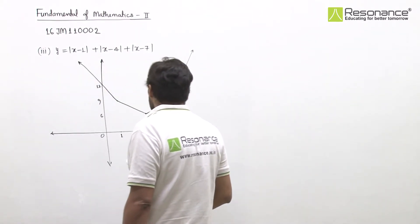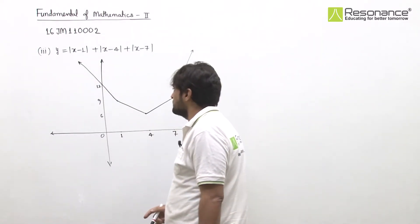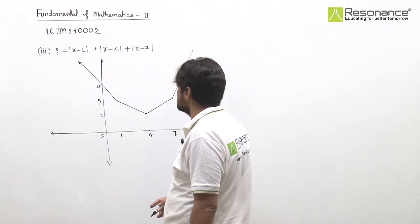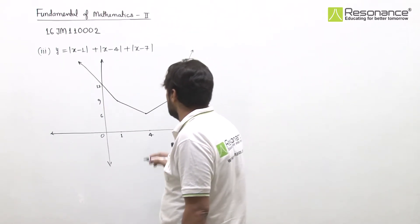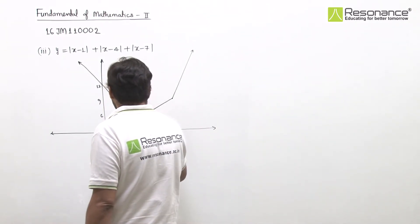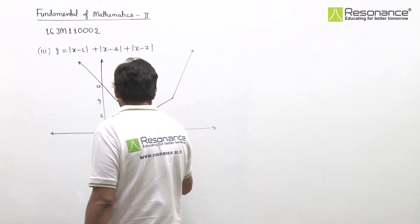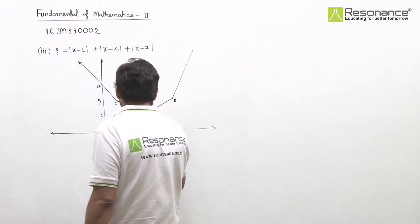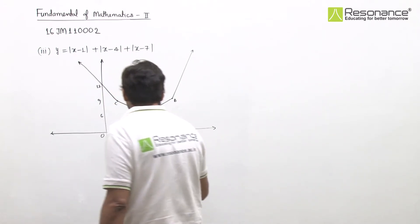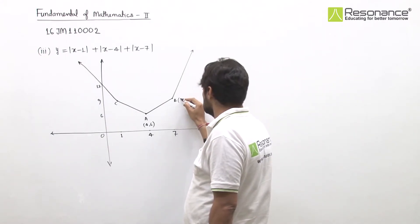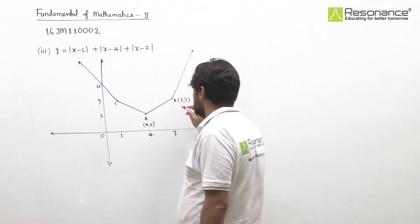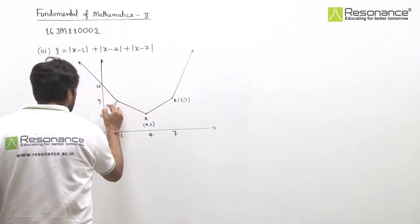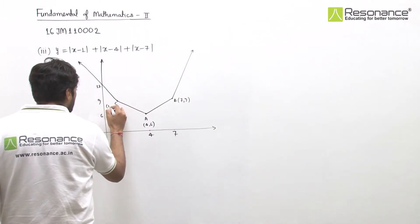This is the graph of y equal to mod of x minus 1, plus mod of x minus 4, plus mod of x minus 7. These are the changing points. Labeling as A, B, C: A has coordinates (4, 6); B has x-coordinate 7, y-coordinate 9; C has x-coordinate 1, y-coordinate 9.